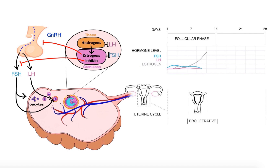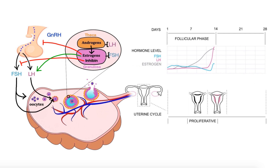The lining of the uterus continues to become thicker and spongier with blood-rich tissues. Once the estrogen levels reach a critical level as the follicle matures within the ovary, estrogen begins to exert positive feedback on LH production, which provokes a steep surge in LH and to a lesser degree FSH. Around day 14, when LH reaches its peak, it triggers the mature follicle to rupture and release the egg into the fallopian tube, in a process called ovulation.